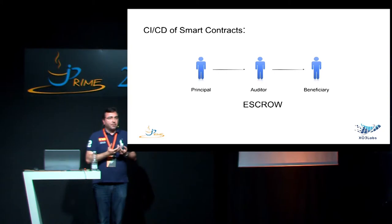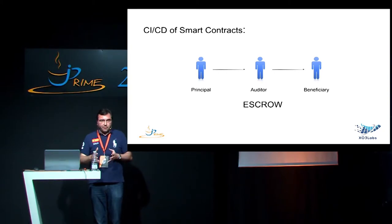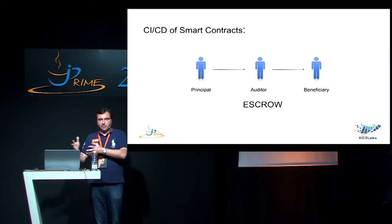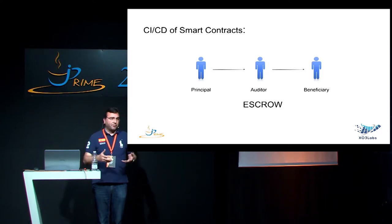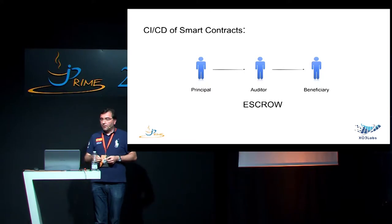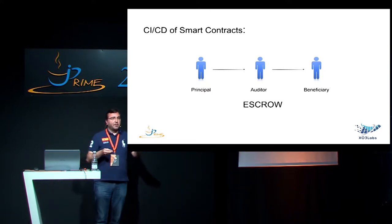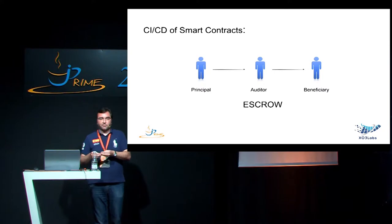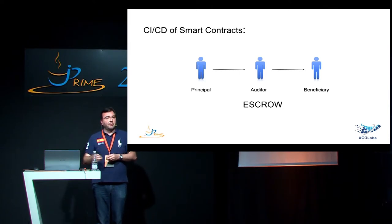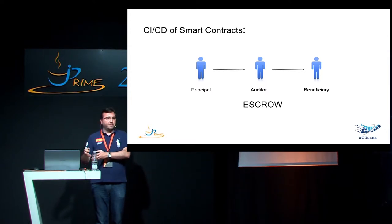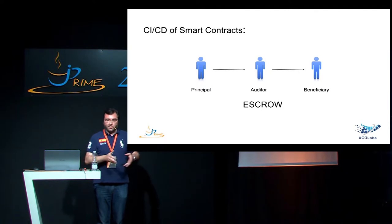When I say money, it can be any digital assets. Then you have the auditor - in the case of a notary, the notary would play the auditor role. And then you have the beneficiary, who is supposed to provide a service or sell goods. The principal gives some funds to the auditor, and the auditor controls that the beneficiary delivered goods or service. If they did, the money is transferred to the beneficiary. If not, the money is sent back to the principal.